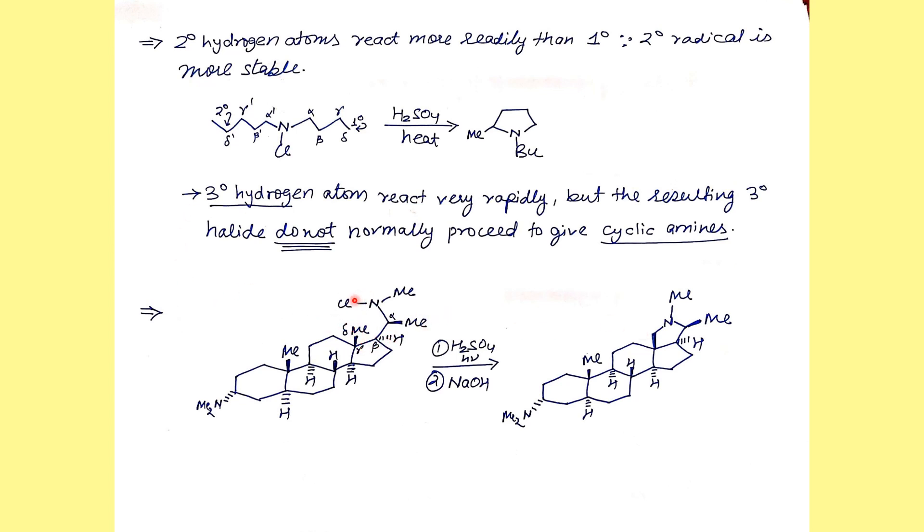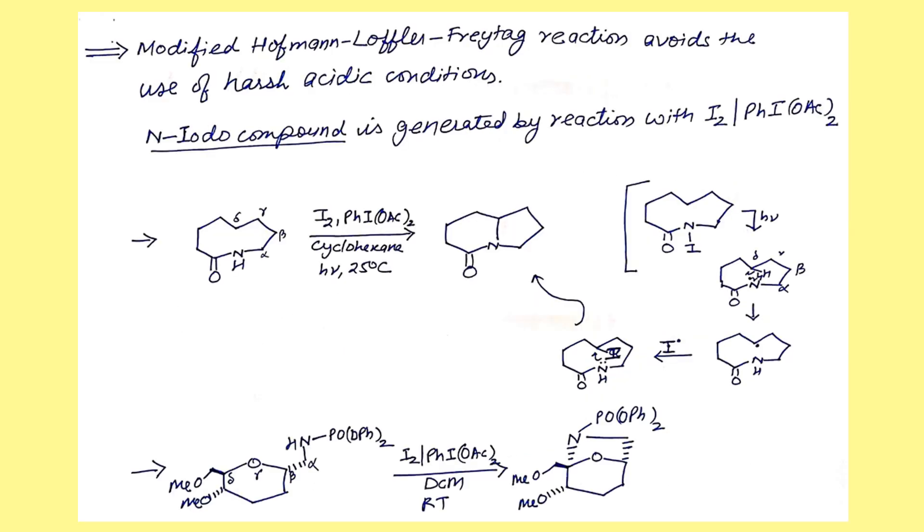It gives alpha, beta, gamma, delta. The delta proton cyclization gives this important architecture from the same side. This is the product you get. Here we see modified procedures that have also been developed.